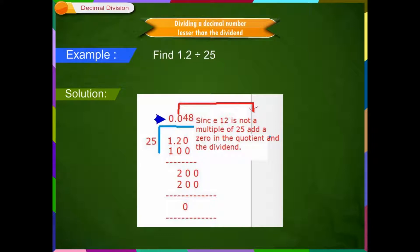Step 2: Now take 12. 12 is less than 25, so add a 0 in the quotient and add a 0 in the dividend too. Step 3: Now divide 120 by 25. The quotient is 4 and the remainder is 20. Step 4: Add a 0 to 20 and make it 200. Divide 200 by 25, which gives 8 as quotient and 0 as remainder. The quotient is 0.048 and the remainder is 0.